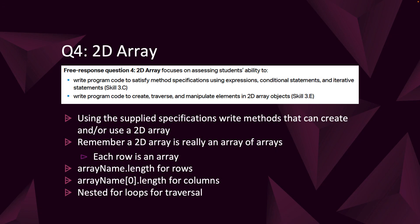Finally, the last question is the 2D array question. Same basic approach we did with 1D arrays on Q3, but now it's working with 2D arrays. Remember that in Java, a 2D array is really just an array of arrays. Array name.length gives you the number of rows. Array name[0].length gives you the number of columns. 2D arrays in Java for AP Computer Science A are always rectangular. The best way to traverse a 2D array is using nested for loops for traversal.